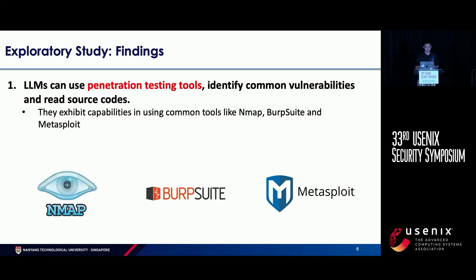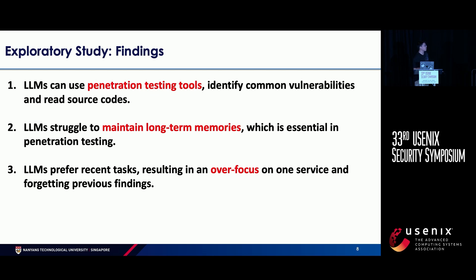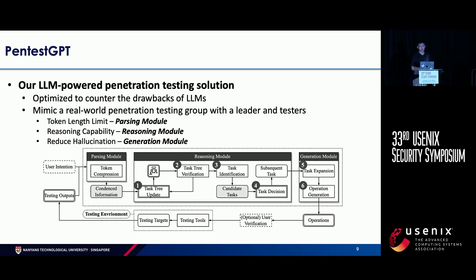We have three primary study findings. First, large language models can use pen testing tools quite effectively, including traditional ones like NMAP, Burp Suite, or Metasploit. Second, large language models struggle to maintain long-term memory, which is typical since most models at that time had very limited token sizes — typically 4,000 or 8,000 for GPT-3.5 and GPT-4. Third, and most importantly, large language models prefer recent tasks: when communicating with the model, it tends to over-focus on the most recent conversation, eventually forgetting previously identified vulnerable services and failing to exploit them.